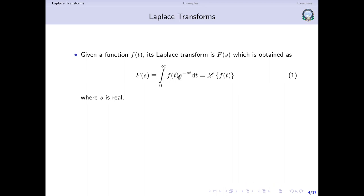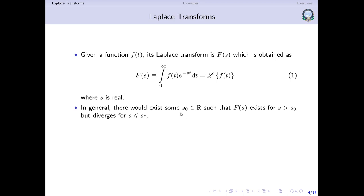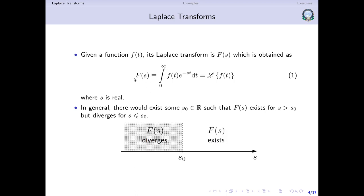Here s is real. In general there will exist some s0, also real, such that F of s exists when s is greater than s0, but does not exist when s is less than or equal to s0. The Laplace transform need not exist for all possible values of s. The value of s0 depends on the specific function whose Laplace transform we are trying to find — we will see this when we do the examples.